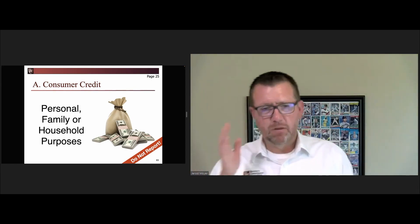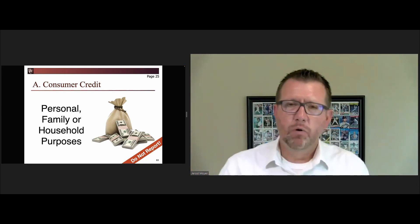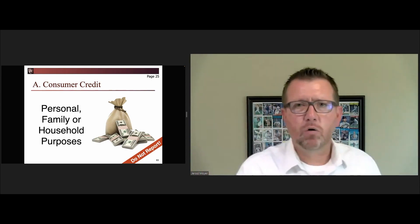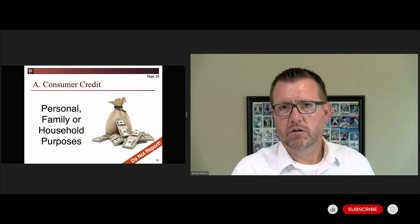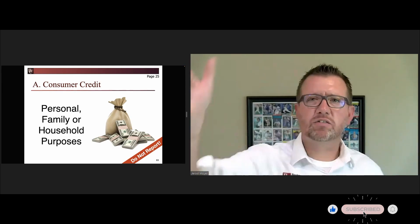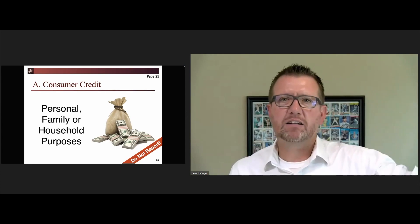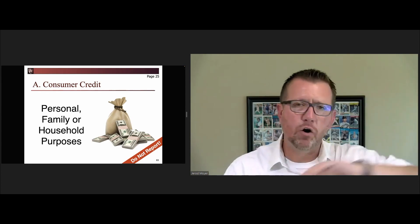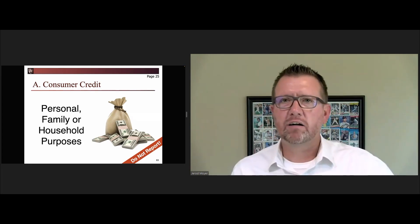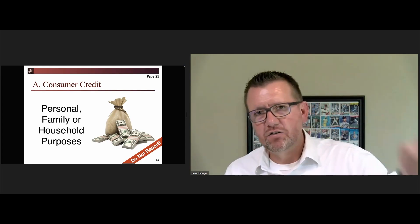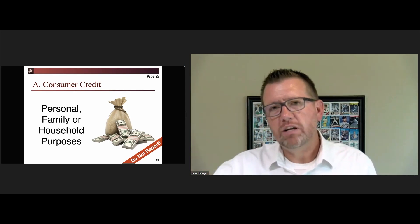I'll reiterate: the paper it's done on doesn't matter. I see all the time where people do consumer loan disclosures for borrowers to buy rental homes, so they can sell the loan on the secondary market and take advantage of secondary market financing terms and rates. You can provide consumer disclosures in situations where they're not required — that doesn't make it consumer credit. 1071 says if it's non-consumer credit, you need to report it.